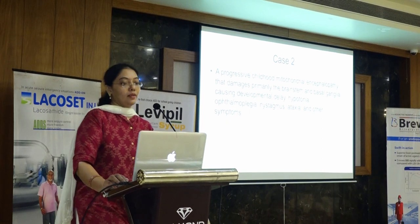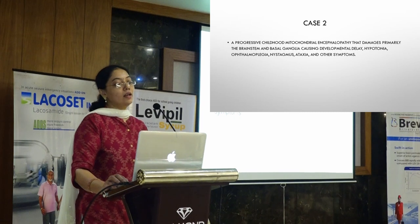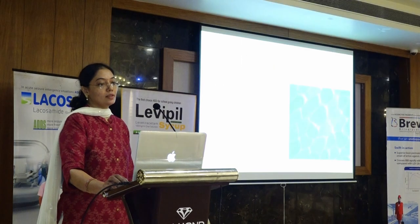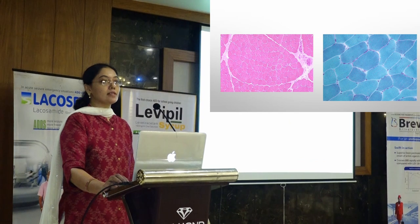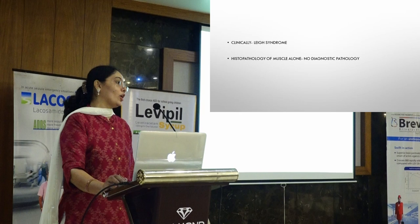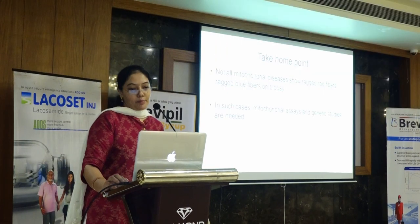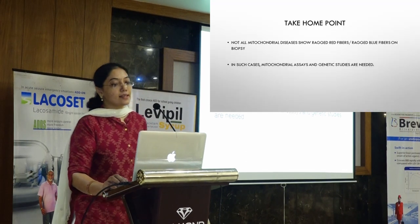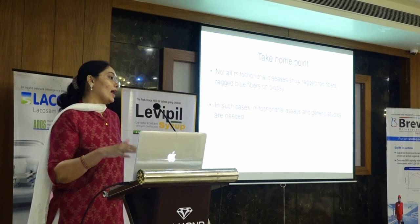Another case: progressive childhood mitochondrial encephalopathy damaging the brainstem and basal ganglia, with developmental delay, hypotonia, ophthalmoplegia, nystagmus, ataxia, and other symptoms. The muscle biopsy is absolutely normal. Histopathology alone would give 'no diagnostic pathology.' Not all mitochondrial diseases show ragged red fibers or ragged blue fibers on biopsy — this has to be remembered. In such cases, mitochondrial assays and genetic studies are required. Histopathology will not be the answer to everything — we cannot give you 100% diagnosis all the time.